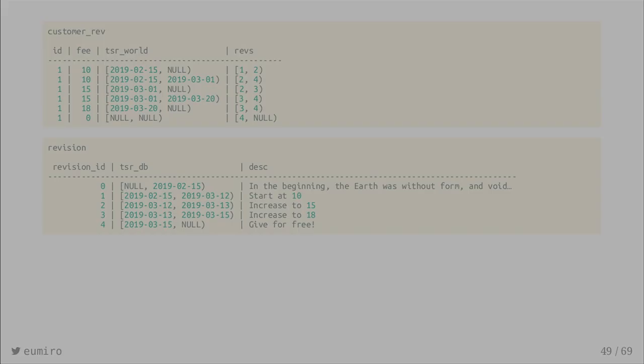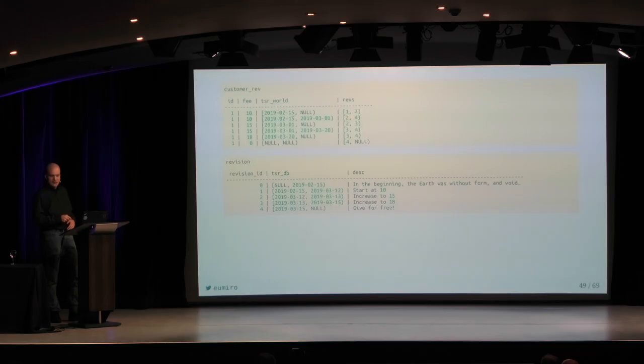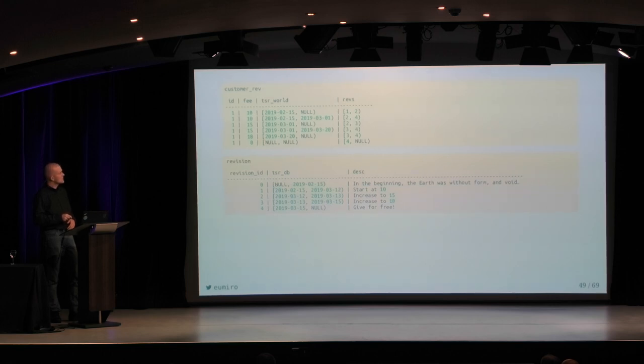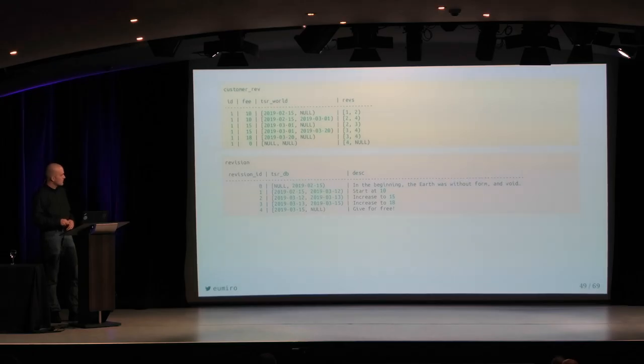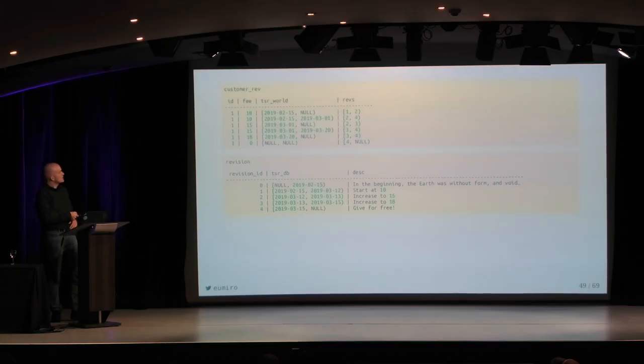And then it looks like this. In our customer_ref table, instead of TSR_DB we have an integer range with the validity — this record was valid from revision one up to revision two excluded, meaning it was valid only in revision one. Another was valid in revisions two and three, another only in revision two, only in revision three, and one introduced in revision four that is still valid. The advantage of this revision table is if you have a huge database with many entities and relations, you just have one revision table, and every time you update something somewhere, all the ref tables can use this common revision table. You also have information about when someone updated something in the database.